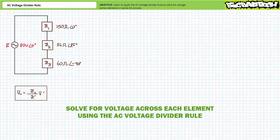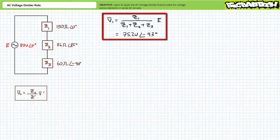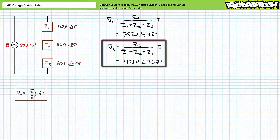The general-use AC voltage divider rule formula doesn't change with additional series elements. Vx equals Zx divided by Z-prime times V-prime. Solving for V1: V1 equals Z1 divided by (Z1 plus Z2 plus Z3) times E, yielding 75.2 volts at negative 9.3 degrees. Solving for V2: V2 equals Z2 divided by (Z1 plus Z2 plus Z3) times E, yielding 43.1 volts at 75.7 degrees.